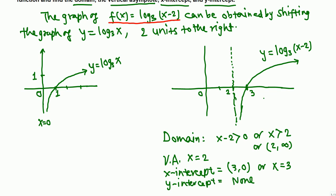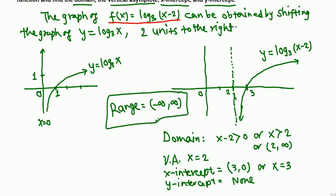For the range: this graph increases from negative infinity all the way to positive infinity. It goes slowly to negative infinity on the left side and slowly increases to positive infinity. So the range is (-∞, +∞).